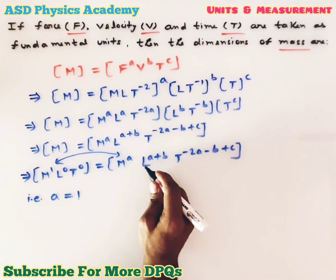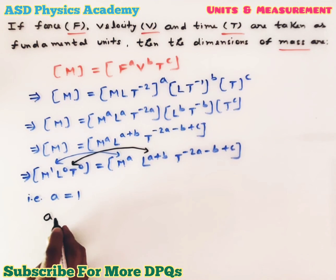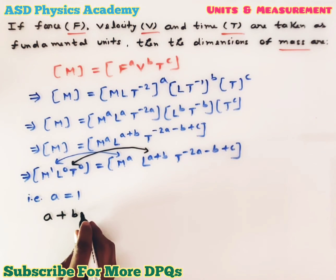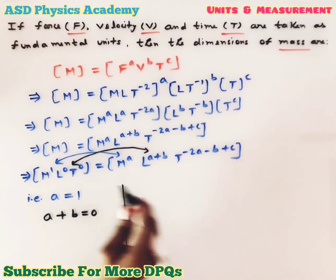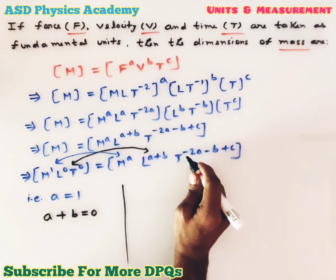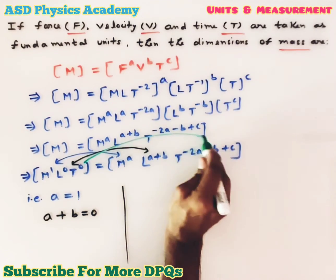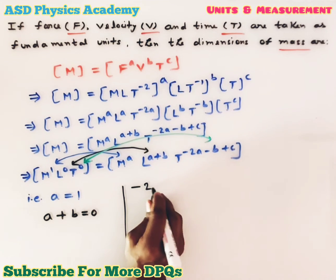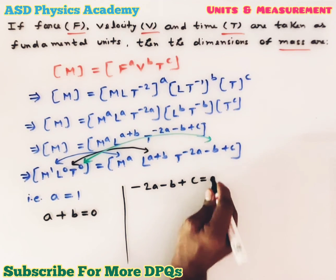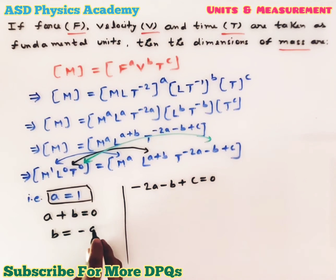Comparing the powers of L: L to the power 0 on the left and L to the power (A + B) on the right, so A + B = 0, giving B = −A = −1. For time, comparing T to the power 0 with T to the power (−2A − B + C), we get −2A − B + C = 0.